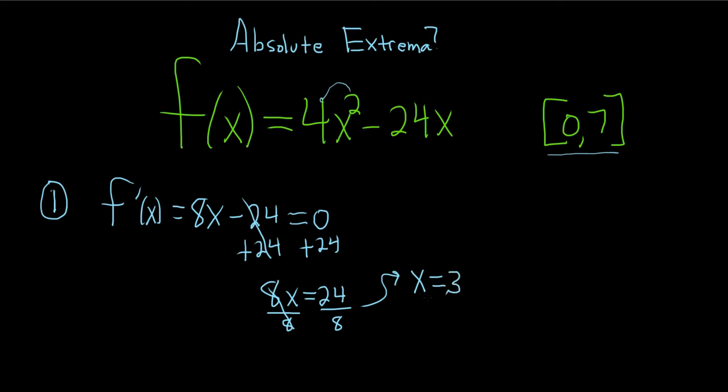Good stuff. So this number is between 0 and 7. That's really important to check. So we're good. So this is our critical number. If it wasn't, we would exclude it.